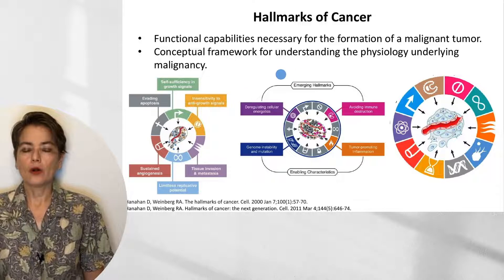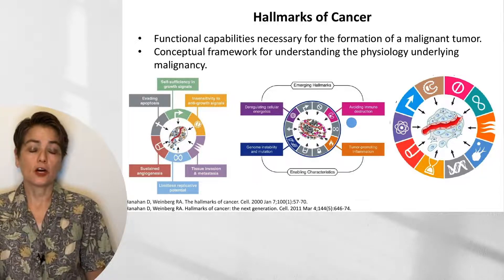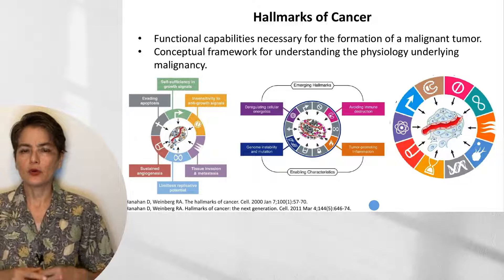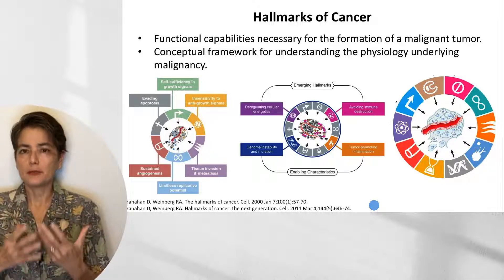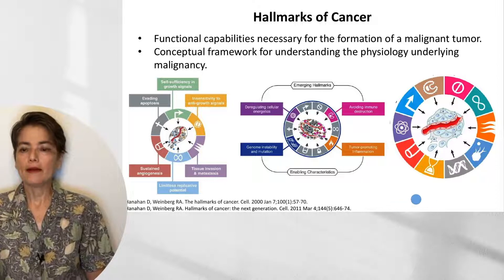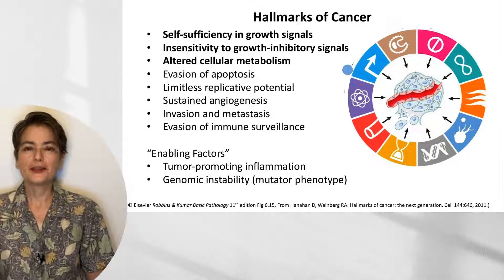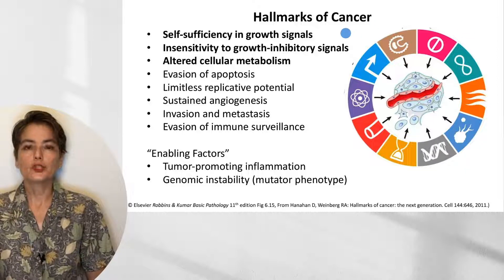Eleven years later, they added a few more, called emerging hallmarks: dysregulating cellular energetics — the Warburg phenomenon, which we'll discuss in this video — and avoiding immune destruction, which I'll cover in the next video. They also included enabling characteristics: tumor-promoting inflammation and genome instability and mutation. What we have now in 2022, shown in the Robbins pathology textbook graphic, includes these eight hallmarks plus the enabling characteristics. In this video, I'll address the first three.